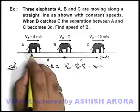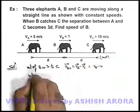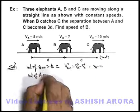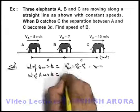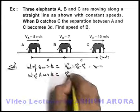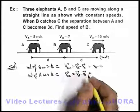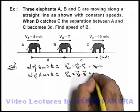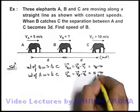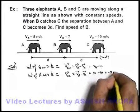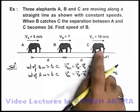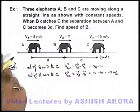If we find the velocity of A with respect to C, it can be written as V_AC = V_A - V_C. That can be written as 5 - 10, which equals -5 meters per second. That means with respect to C, A is going away from it.